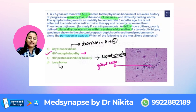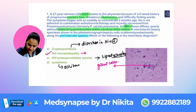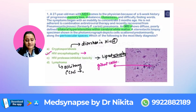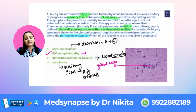Lymphoma in an HIV-positive patient is mostly a solitary lesion. Primary CNS lymphoma in the HIV-positive patient can present as a ring-enhancing lesion. It will not come as bilateral hyperintensities within the cerebral white matter.